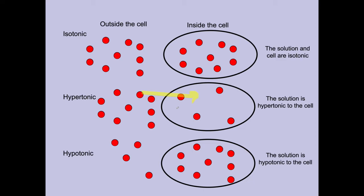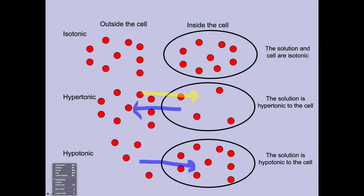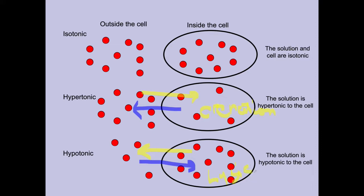In the hypertonic situation, solutes move into the cell and water moves out. In a hypotonic solution, the water concentration outside is higher because the solute concentration is lower, so water moves into the cell and solutes move out. When that occurs, the cell undergoes crenation. In a hypotonic solution with all that water moving in, the cell goes through lysis — it fills up with so much water it breaks open. Think of overfilling a water balloon.